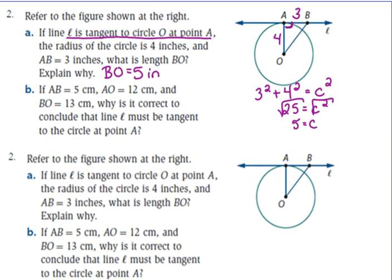If it's a tangent line, it forms a right angle, so we have a right triangle and can use the Pythagorean theorem. And just as a side note, three, four, five is what we consider a special right triangle. If the two legs of the triangle are three and four, then we know the hypotenuse is five. Vice versa: if the hypotenuse is five and one leg is three, I know the other leg is four. It's a special triangle that you should remember.